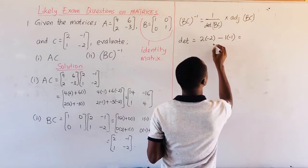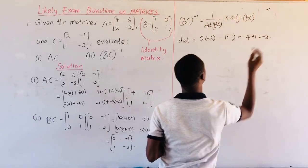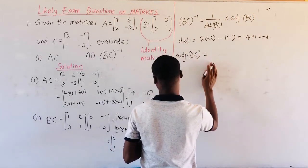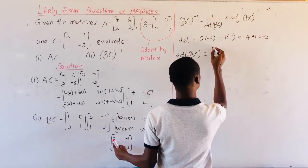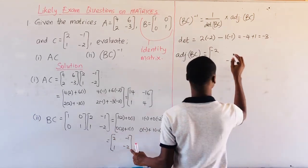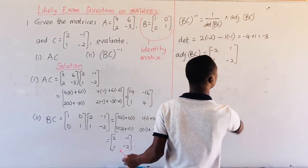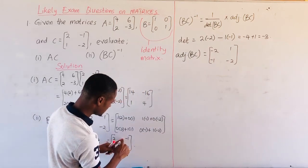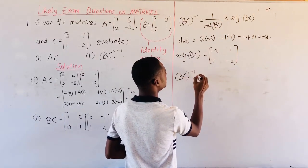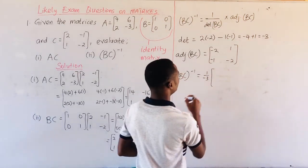This will give us negative 4 plus 1, which is negative 3. Then the adjoint of the matrix is found by interchanging the positions of the leading diagonal, and negating the values in the minor diagonal. So negative of negative 1 gives us 1, and when we negate the other value we have negative 1.